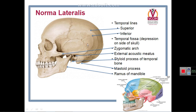The temporal fossa is formed by the frontal bone, parietal bone, temporal bone, and greater wing of sphenoid. The piece of temporal bone here is called the squamous temporal bone. These four bones meet in an H-shaped suture called the pterion. The pterion is also the site of a membrane in neonates called the anterolateral fontanelle, which ossifies at about three to six months of age.